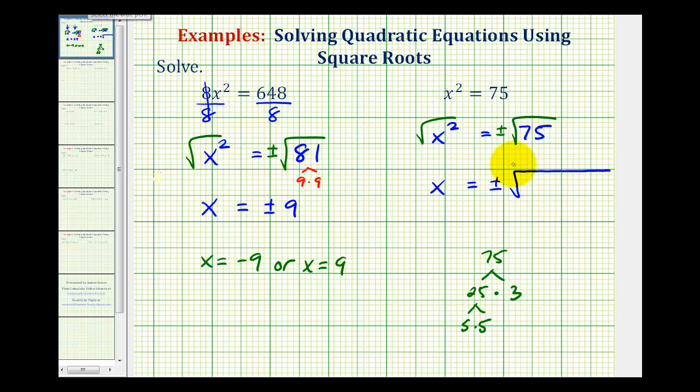So just to show the work here, we can write 75 as 5 times 5 times 3. Here's the perfect square factor of 75 that's going to simplify. The 3 is going to stay underneath the square root.